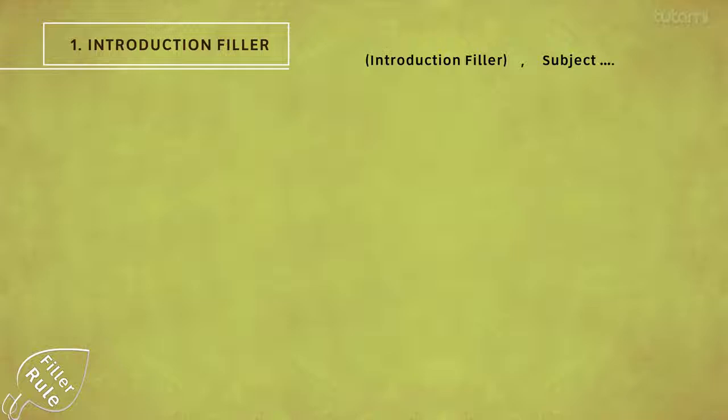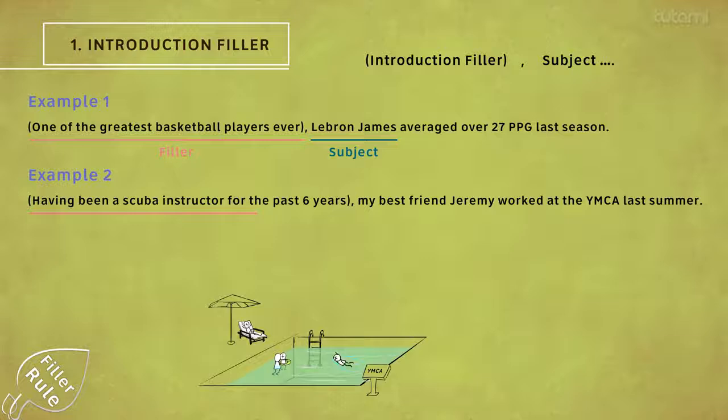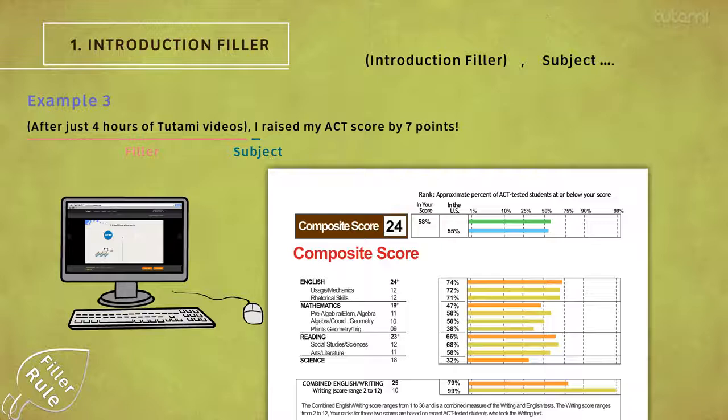In this first example: 'One of the greatest basketball players ever, LeBron James averaged over 27 points per game last season.' Or example two: 'Having been a scuba instructor for the past six years, my best friend Jeremy worked at the YMCA last summer.' Example number three: 'After just four hours of Tatami videos, I raised my ACT score by seven points.'